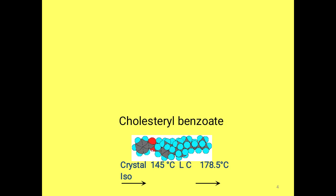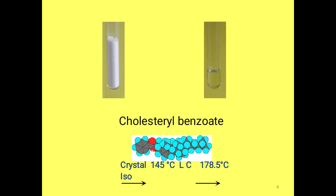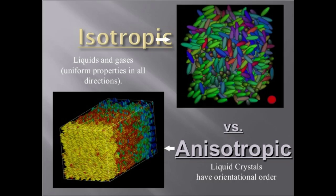Cholesterol benzoate is the best-known example of a liquid crystalline compound. Its behavior depends upon temperature: below 145°C the compound remains a solid, and above 178.5°C the compound becomes a liquid. In between these temperatures, it exhibits liquid crystalline properties. You can see in the slide: the first image is completely solid (below 145°C), the second is completely liquid (above 178.5°C), and the cloudy liquid in between is the liquid crystal phase — having properties of both solids and liquids.